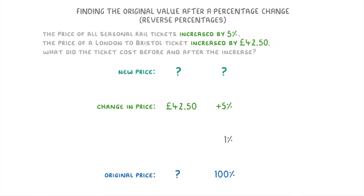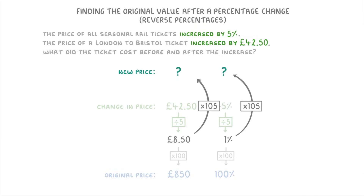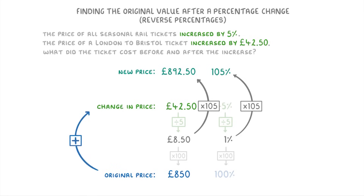So just like before, let's think of it in terms of the original price, which is 100%. But this time we're given the value of the change rather than the new price. The question tells us the price increased by 5%, and the actual value of that 5% increase is £42.50. So to find 1%, we divide £42.50 by 5 to get £8.50. To find the original price, we multiply £8.50 by 100 to get £850. Then to find the new price, we multiply £8.50 by 105 — the original 100% plus the extra 5% — giving us £892.50. Alternatively, you could just add £850 and £42.50 to also get £892.50.